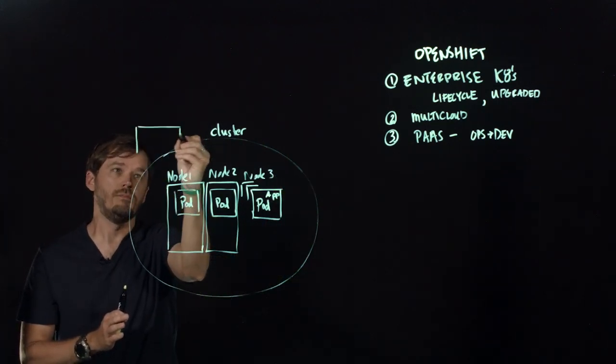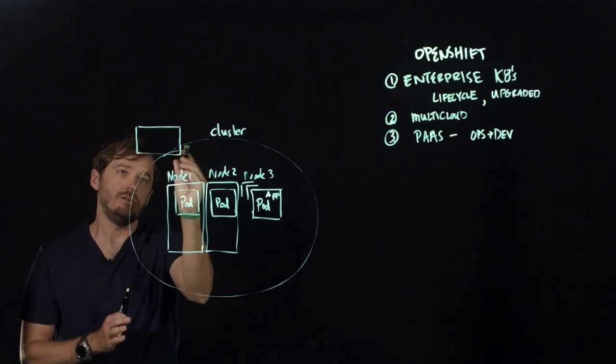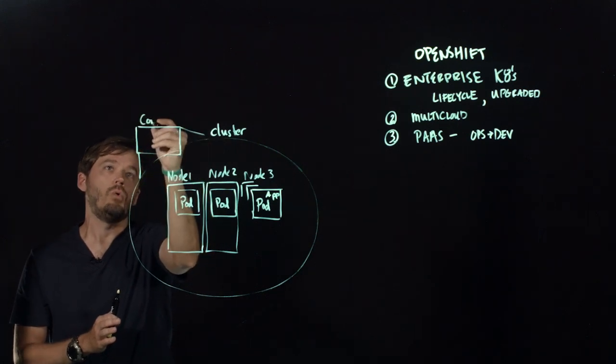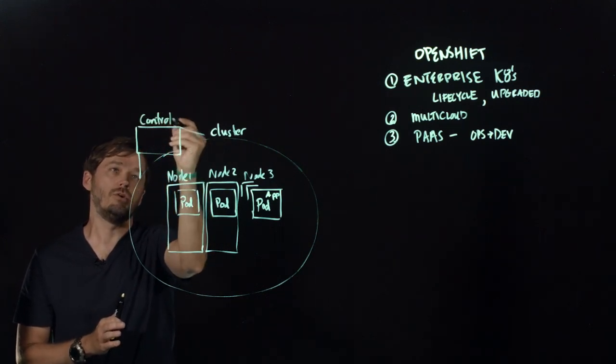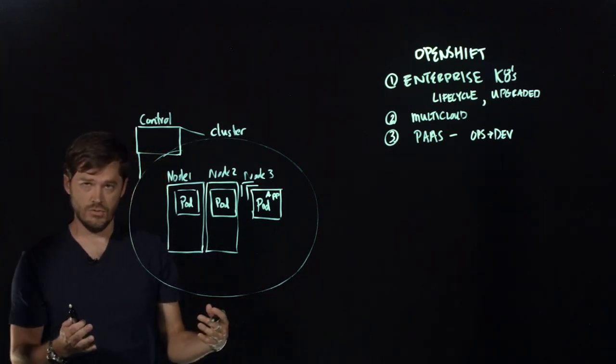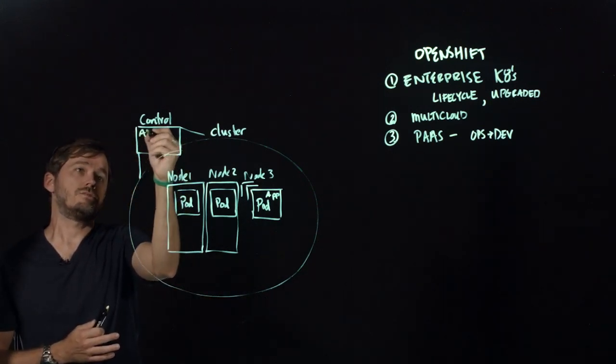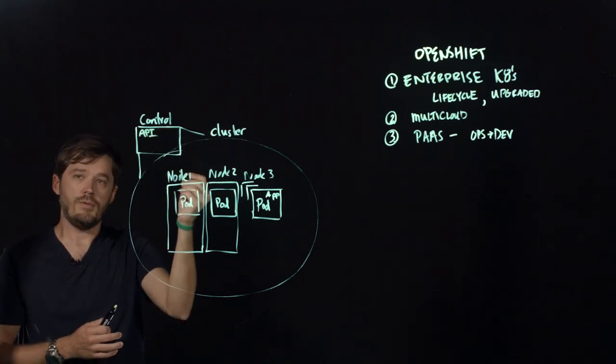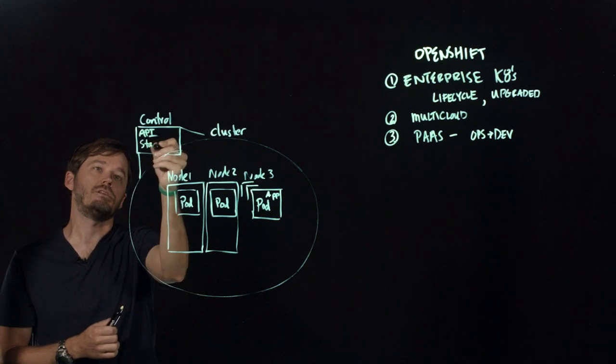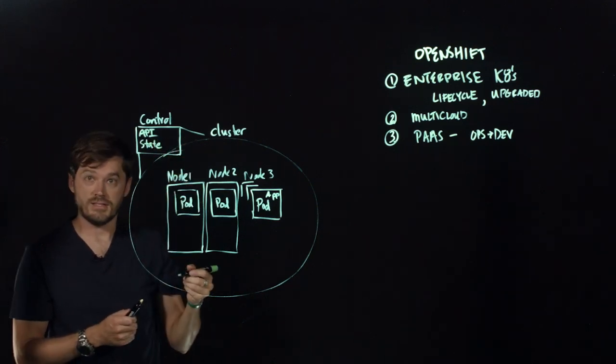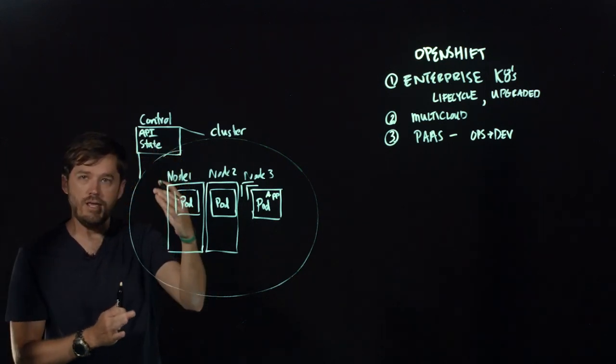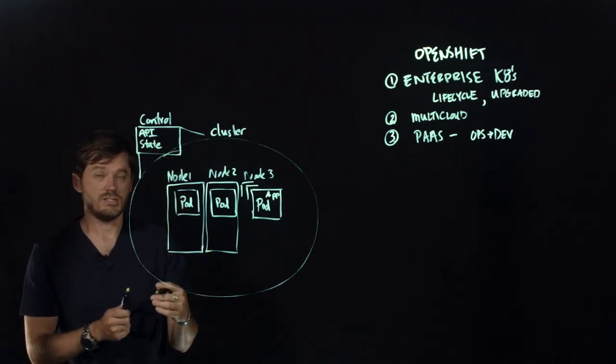Fundamentally, we have a control plane, which is a member of the cluster. It is not external. And the control plane, or what some call master nodes, has several different key cluster-wide operational services. These include the cluster API or Kubernetes API that can be called. This also includes the state of the cluster, which is managed by etcd in OpenShift's case. There are a couple other key services that are cluster-wide, such as a service registry.